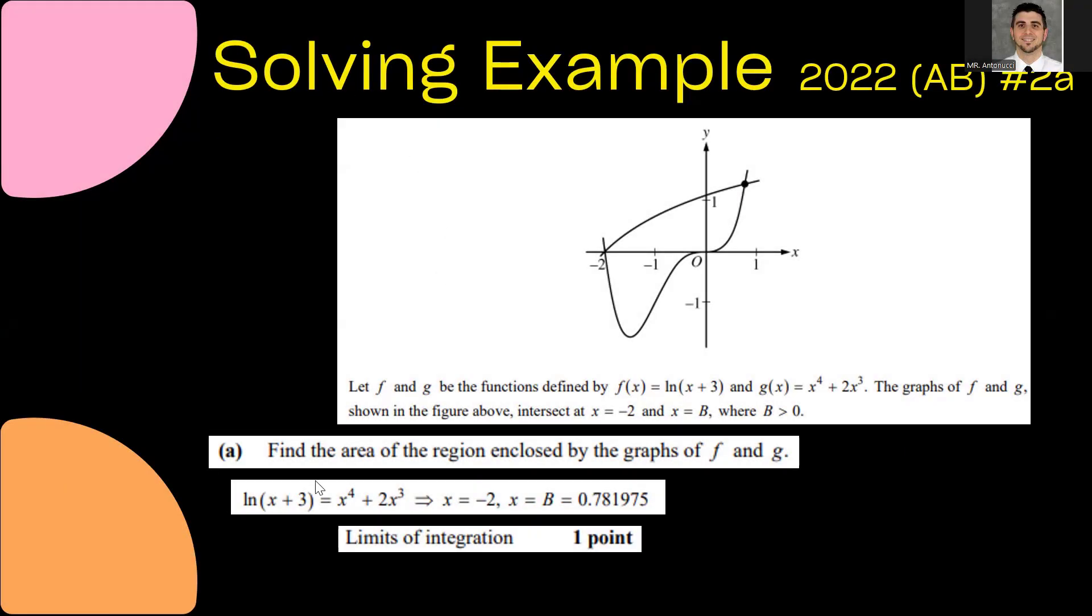So if we look back at the question, notice the scoring guidelines. You have to show the equations set equal to one another. And also another quick trick you could do is because they already defined them as f and g, instead of writing the whole equations here, you could write f(x) = g(x) and then x = -2 and x = 0.781975.